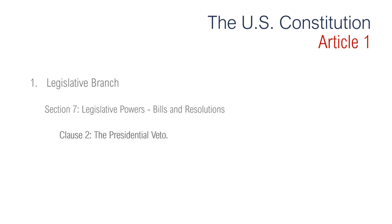Section 7, Clause 2 is regarding the presidential veto. It says that when Congress sends the president a bill, he or she can sign it — in which case it becomes a law — or they can send it back to the chamber in which it originated. If it is sent back, a two-thirds majority of each chamber must pass it again for it to become law. If the president neither signs nor sends it back within 10 days, it becomes law anyway, unless Congress adjourns in the meantime.